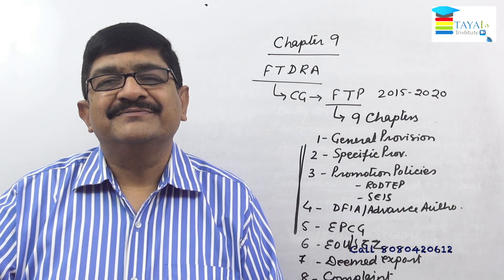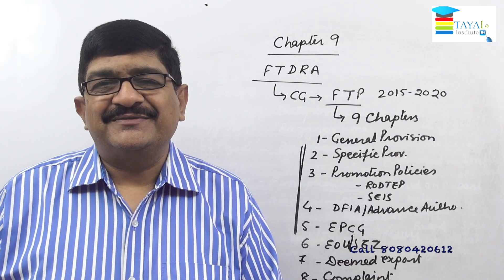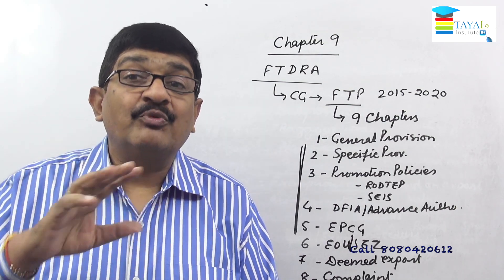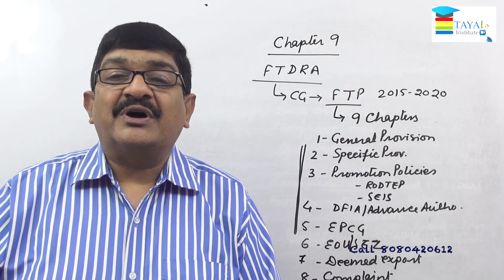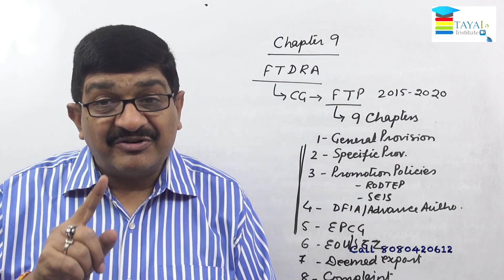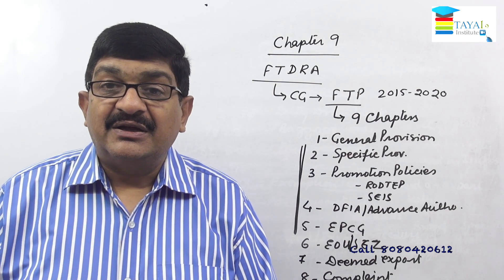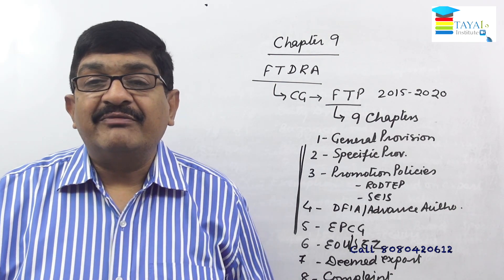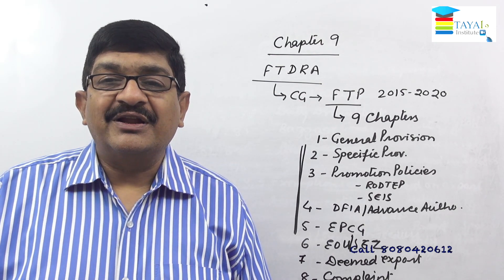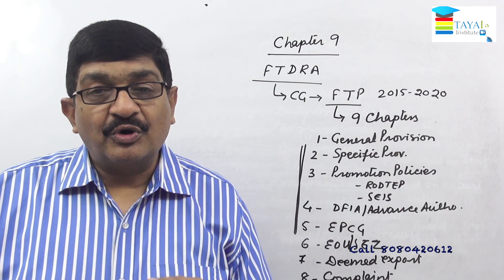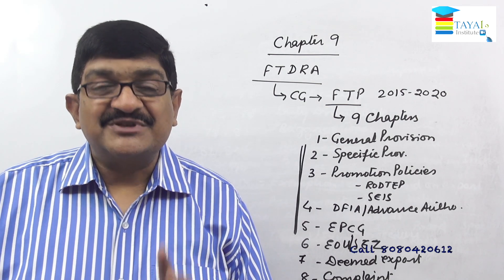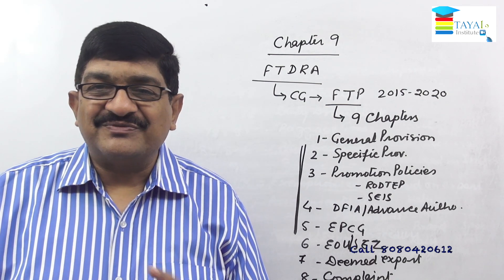A strong suggestion: start with customs rather than module one (GST). Generally students start from GST modules one, two, and three, and by the time they reach module three they are exhausted, covering this 25-mark portion poorly and failing to score well. If you start from the area where scoring is assured and then go to GST, your overall result improves. GST carries 75 marks and you will naturally put more effort there. I will make customs interesting and easy to understand and will always be available for your questions.